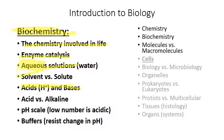Acids and bases: acids are sour to the taste and can be reactive if concentrated enough. Bases are bitter to the taste. Vinegar, for instance, is a very weak acid — acetic acid. If the vinegar were very concentrated, it would burn your tongue. If you get an upset stomach, you take Tums or bicarbonate of soda, which is a base — something that can neutralize an acid. We measure how acidic or basic something is using the pH scale. A low pH number means something is acidic; a high pH number means it is basic.